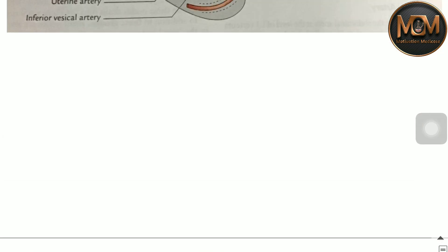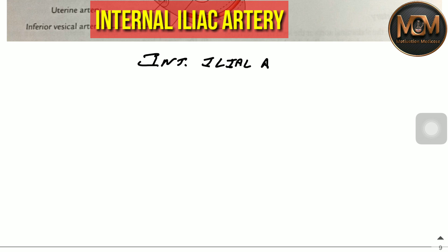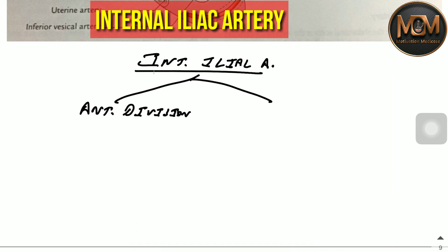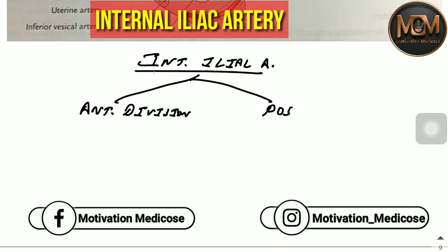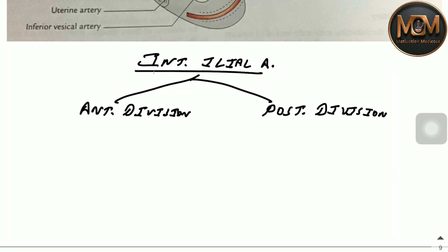Now we'll see the branches of the internal iliac artery. One important thing to understand is that the internal iliac artery has two divisions: the anterior division and the posterior division. I have a very interesting mnemonic to remember the branches of both the anterior and posterior divisions.